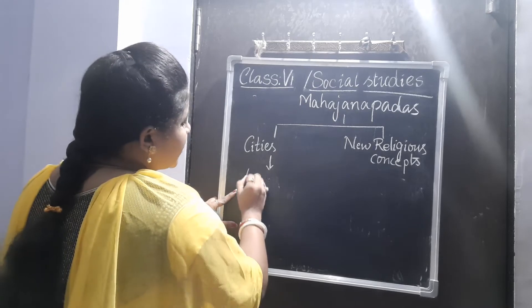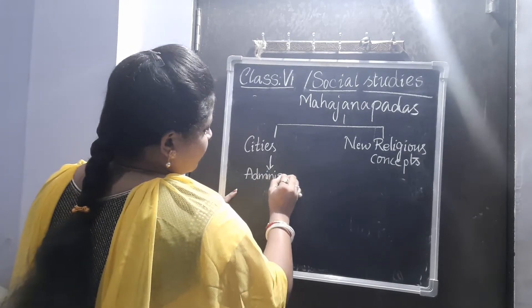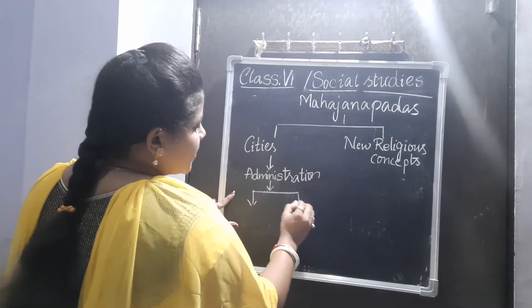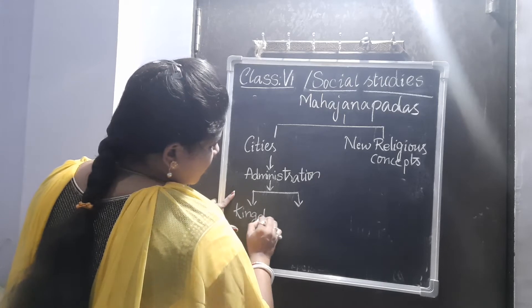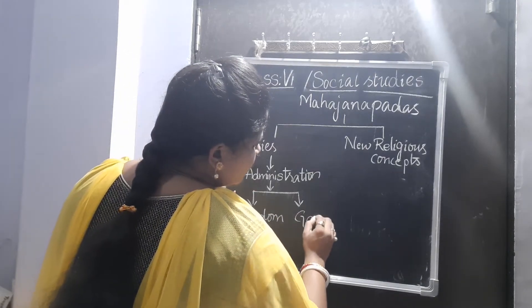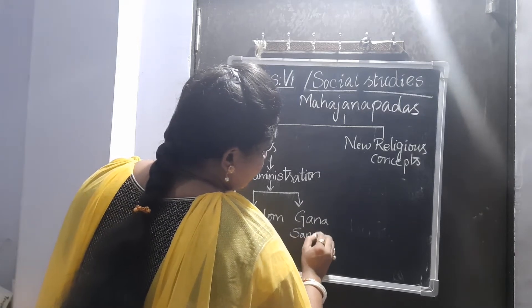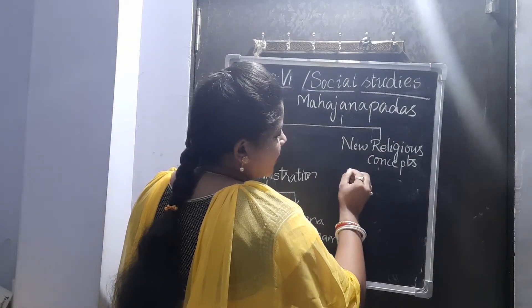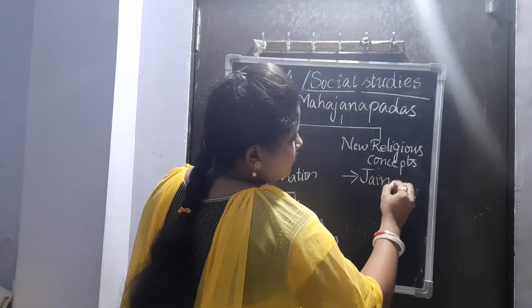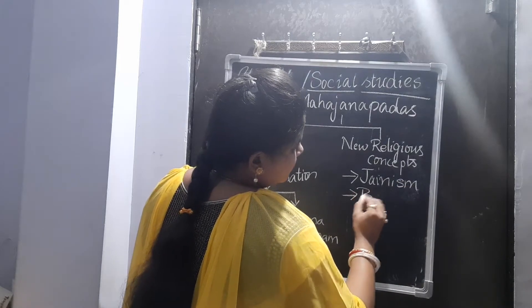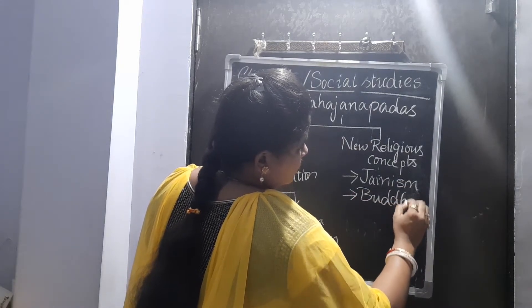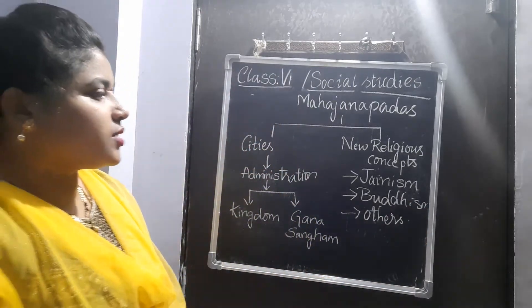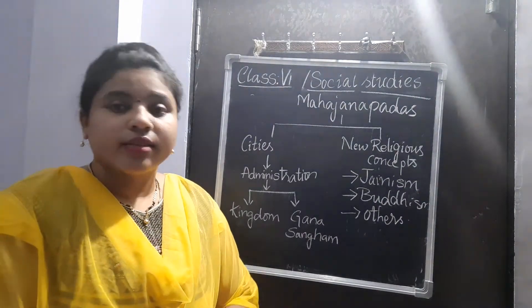Under Mahajanapadas, we have cities on one side and new religious concepts on the other. Again in the cities we find administration, and in administration we have kingdoms — every kingdom has its own administration — and the other is Gana Sangham. The new religious concepts are divided into three: Jainism, Buddhism, and some other religions. In this part of the lesson, we are going to talk clearly only about the Mahajanapadas.